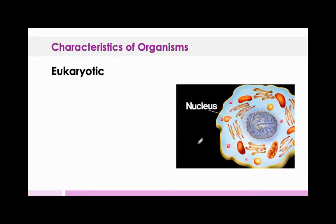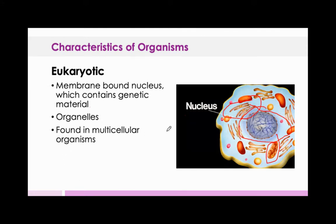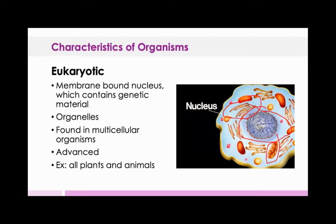Eukaryotes have a membrane-bound nucleus which contains genetic material. They have organelles such as mitochondria and the endoplasmic reticulum, found mostly in multicellular organisms, though they can also be single-celled. They are far more advanced in complexity and can do a lot more. Examples include all plants and animals, fungi, and protozoa — basically most everything you can see that's an organism is going to be considered eukaryotic.